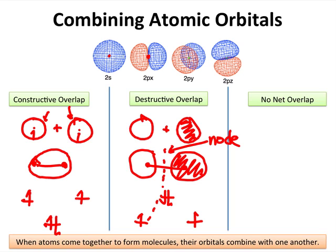Finally, a third possibility is no net overlap. You often see this in examples where the two p orbitals are perpendicular to one another, or a p orbital is interacting with an s orbital. Let's consider that latter case.